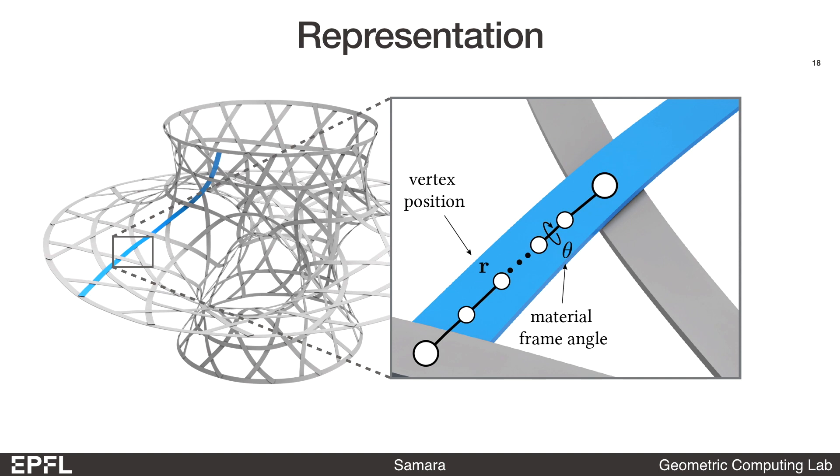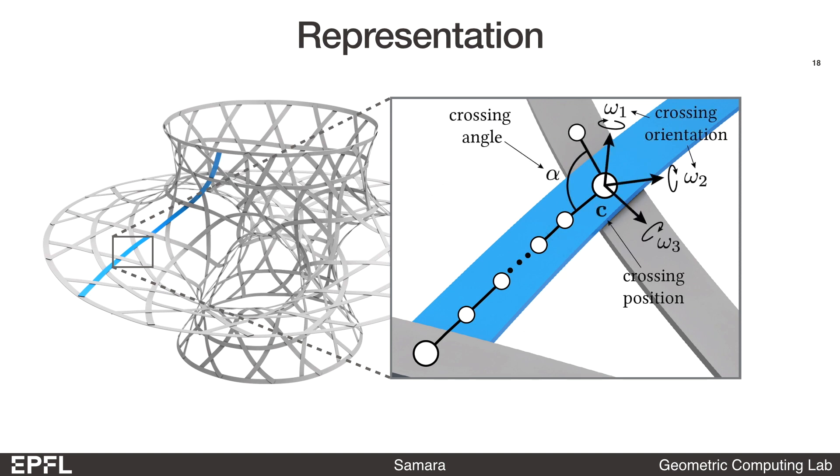In order to connect the continuing segments and model the interaction between crossing segments, we define some additional variables. Each crossing is parameterized by its position, orientation, and angle variable. To account for the ribbon thickness and the interlacing weaving pattern, each crossing also has a positional offset parameter for its adjacent ribbon segments. This crossing model implicitly constrains the ribbons to lie flat on top of each other to promote stability in the woven structure.